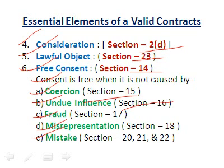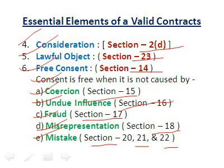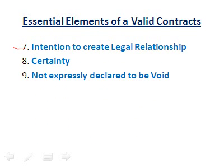Free consent is defined in Section 14. Consent is free when it is not caused by coercion, undue influence (Section 16), fraud (Section 17), misrepresentation (Section 18), or mistake (Sections 20, 21, and 22). Next is intention to create a legal relationship. Finally, the contract must have certainty — it must not be vague or ambiguous — and must not be expressly declared void.